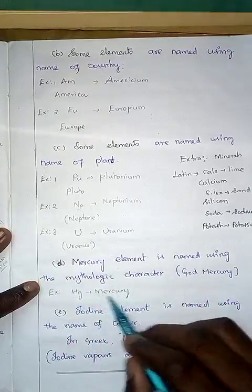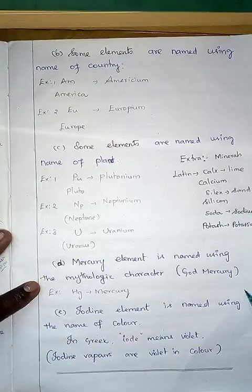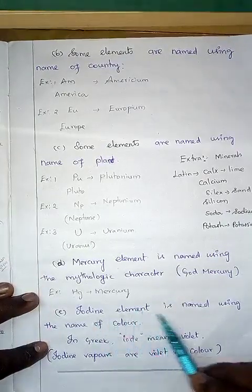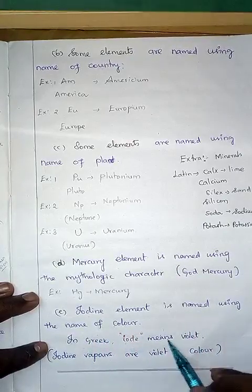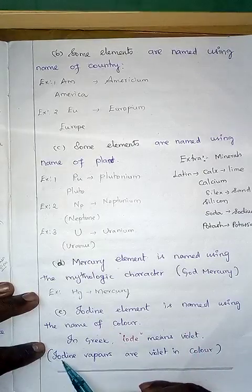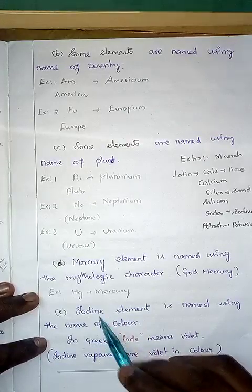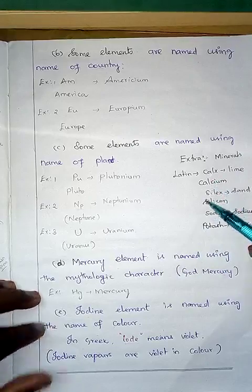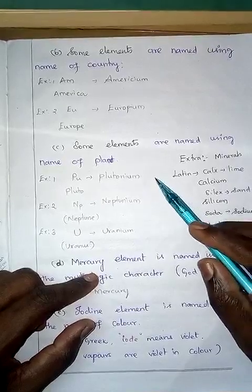The mercury element is named using a mythological character — the god Mercury, symbol Hg. Some elements are named using color. Iodine is an example: in Greek, iod means violet, and iodine vapors are violet in color — that is why the name iodine was used, with I as its symbol.